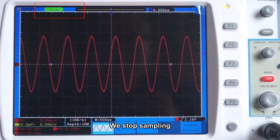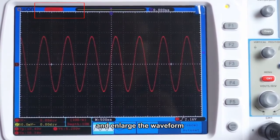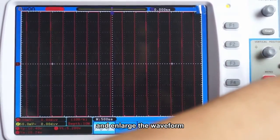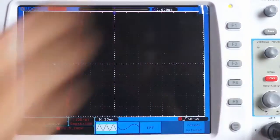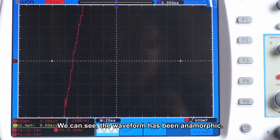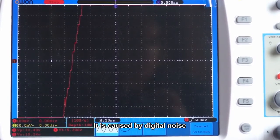We start sampling, then enlarge the waveform. You can see the waveform has been anamorphic. It is caused by digital noise.